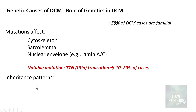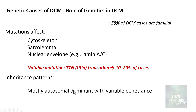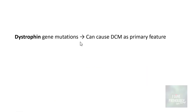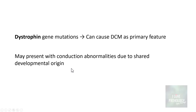The most common inheritance pattern is autosomal dominant with variable penetrance, but it can also be X-linked, autosomal recessive, or rarely mitochondrial. Notably, dystrophin gene mutations — which we know can cause muscular dystrophies — can also cause dilated cardiomyopathy as a primary feature, presenting with conduction abnormalities due to their shared developmental origin.